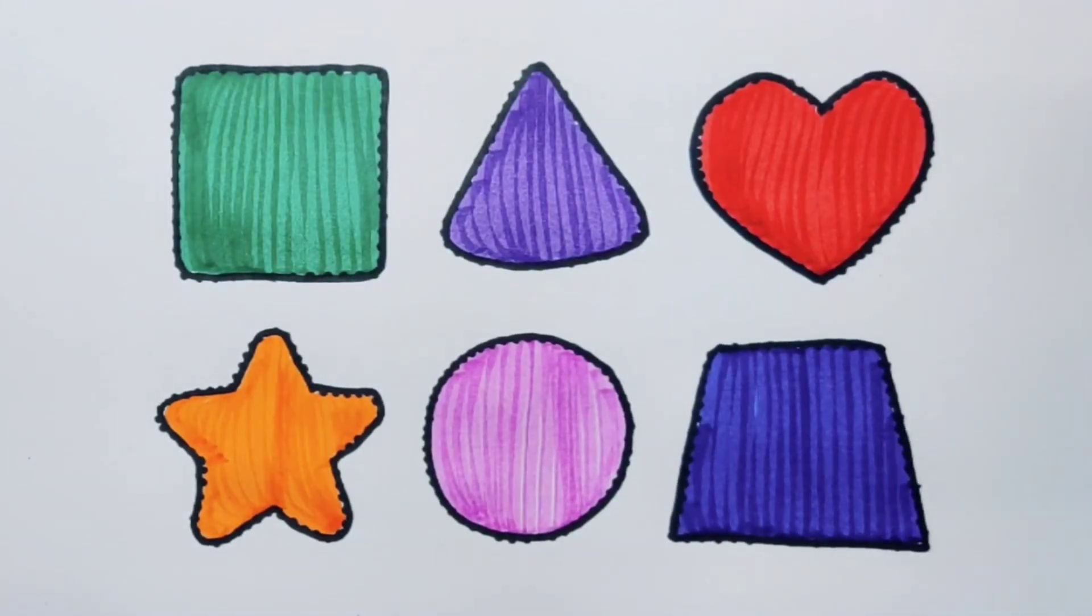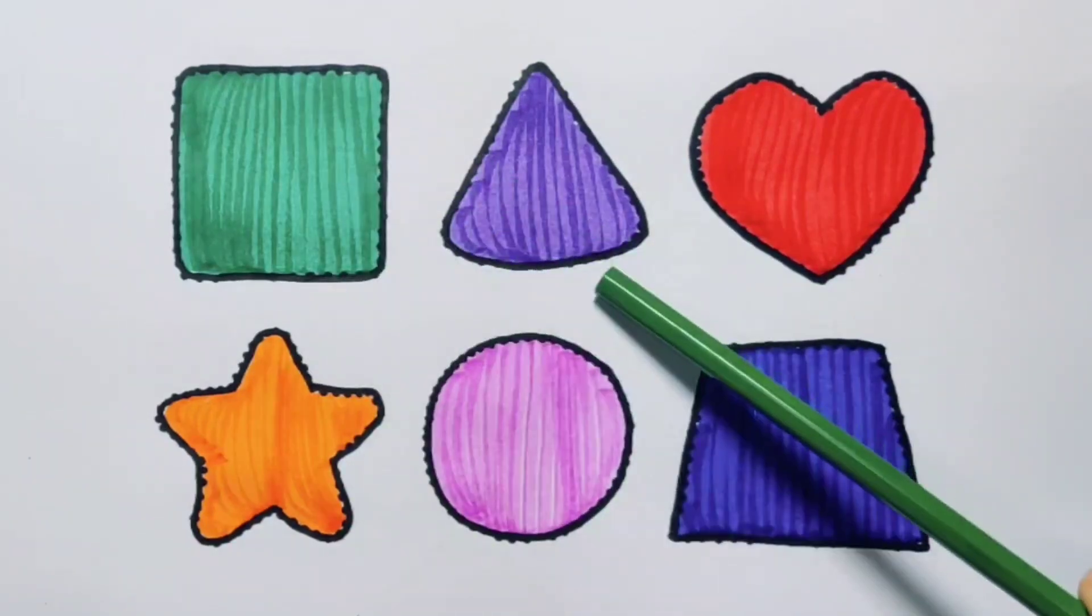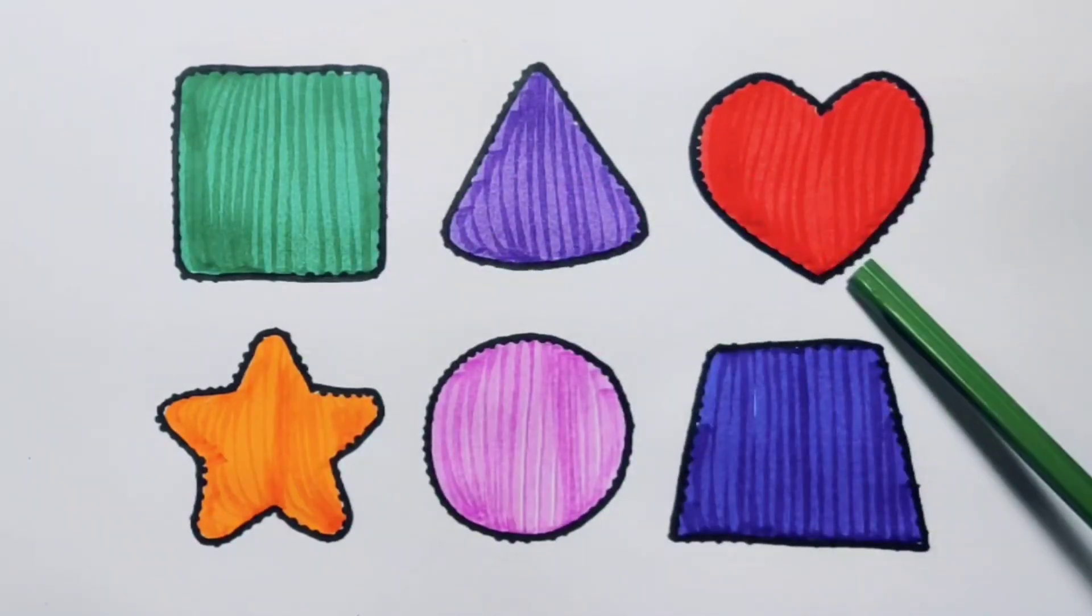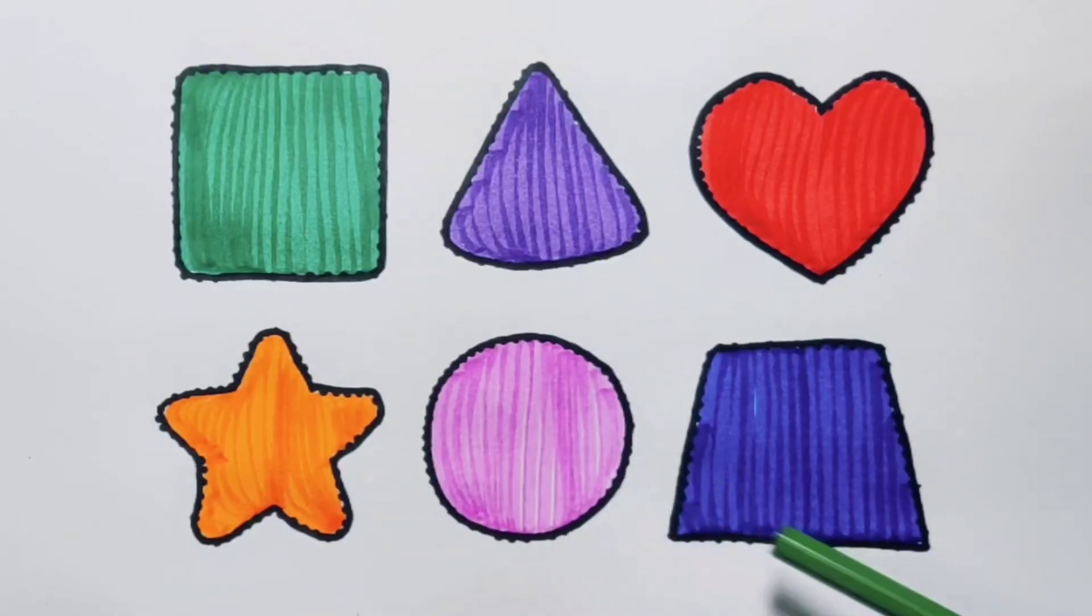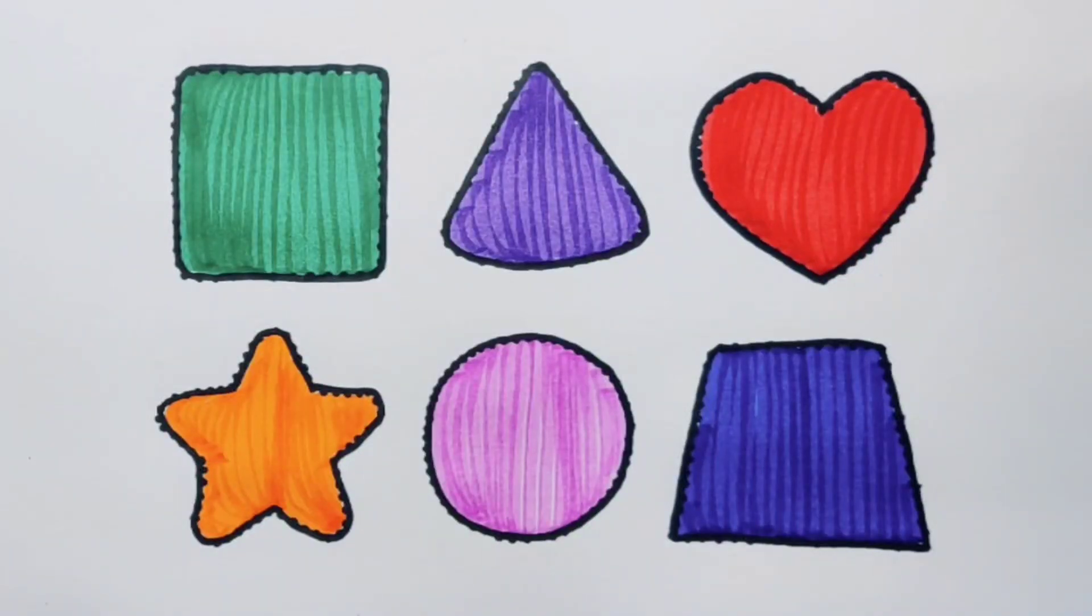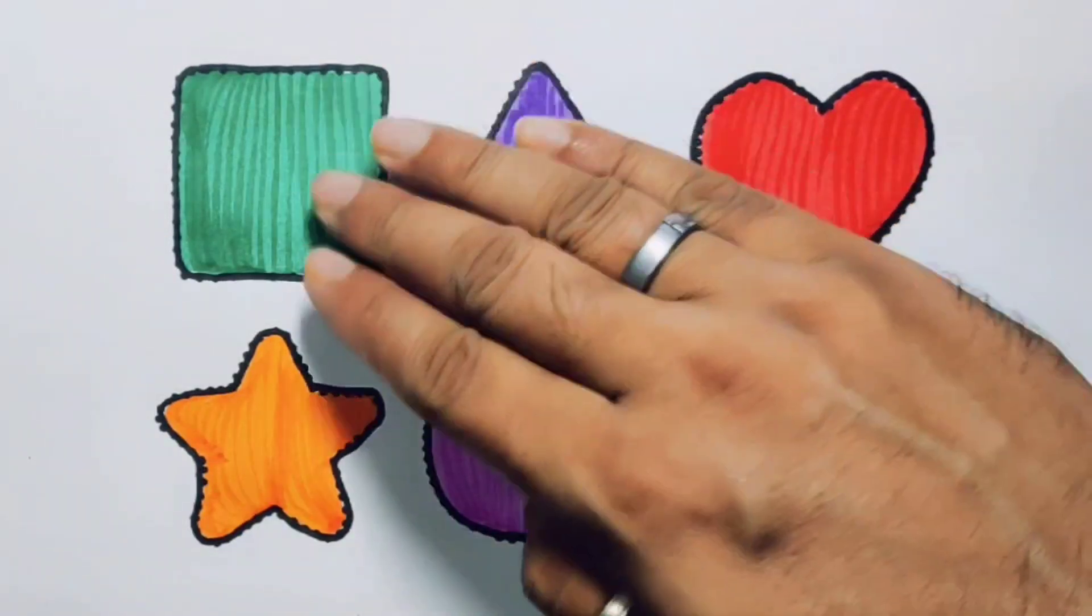What we learned: green square, purple triangle, red heart, orange star, pink circle, blue trapezium. Thank you for watching my video. If you like it, please subscribe. Bye bye!